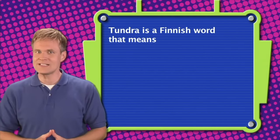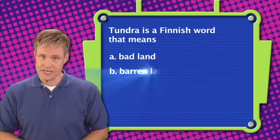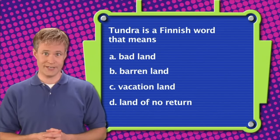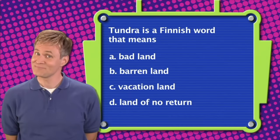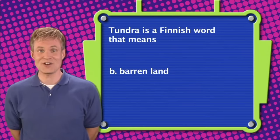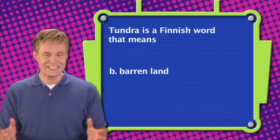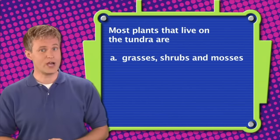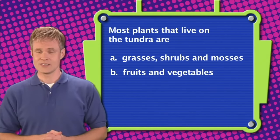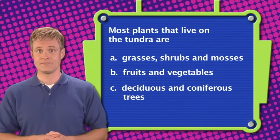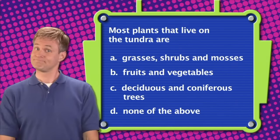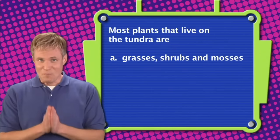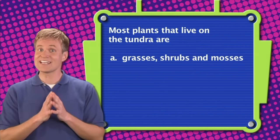Tundra is a Finnish word that means: A. Bad land, B. Barren land, C. Vacation land, or D. Land of no return. The correct answer is B — tundra is a Finnish word that means barren land. Next question: Most plants that live on the tundra are: A. Grasses, shrubs, and mosses, B. Fruits and vegetables, C. Deciduous and coniferous trees, or D. None of the above. The correct answer is A — most plants that live on the tundra are grasses, shrubs, and mosses.